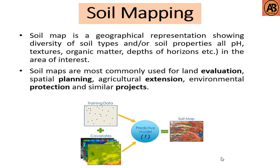Welcome to another video. In this video we are going to learn about soil mapping, which is part of soil survey. A soil map is a geographical representation showing the diversity of soil types and soil properties — such as pH, texture, organic matter, depth of origin horizons, etc. — in the area of interest. Soil maps are most commonly used for land evaluation, spatial planning, agricultural extension, environmental protection, and similar projects.